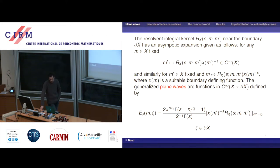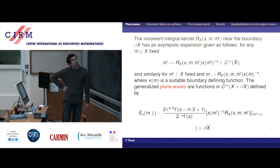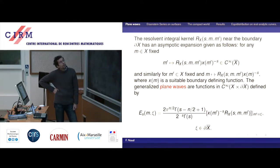Once you have this meromorphic continuation outside from the resonances — from the poles — you can analyze the structure of the resolvent, the Schwartz kernel of the resolvent. We have the precise asymptotic behavior. The trick to define plane waves is to look at the restriction on the boundary: you fix one variable, fix S (which is not a pole), and let M prime go to infinity. You have to renormalize — multiply by the correct factor, which is x of M prime to the power minus S, where x is a defining function telling you how close to the boundary you are. When you do that, you recover an eigenfunction of the Laplacian.